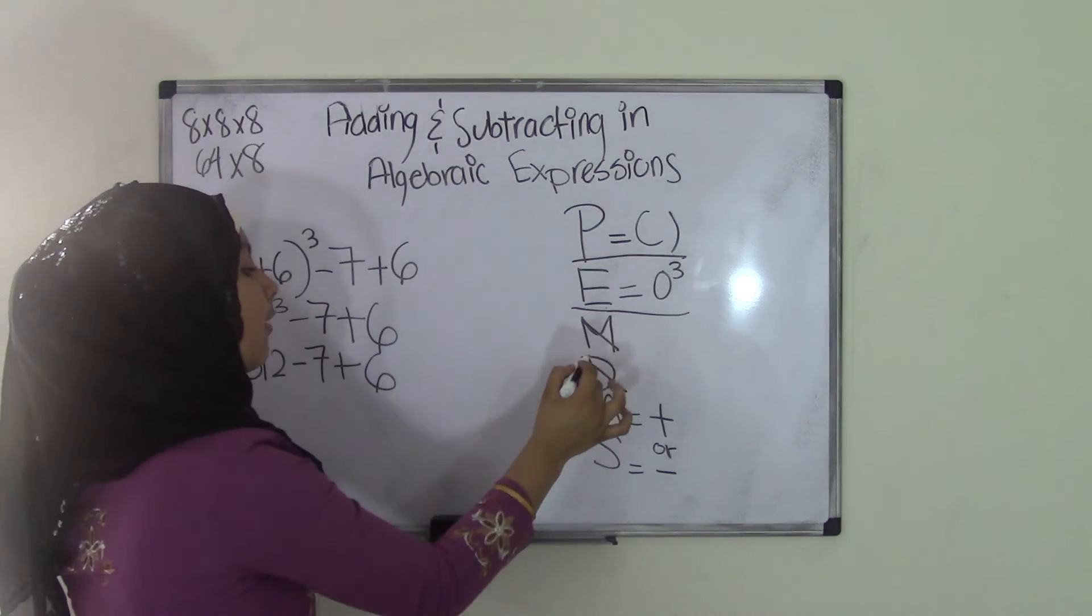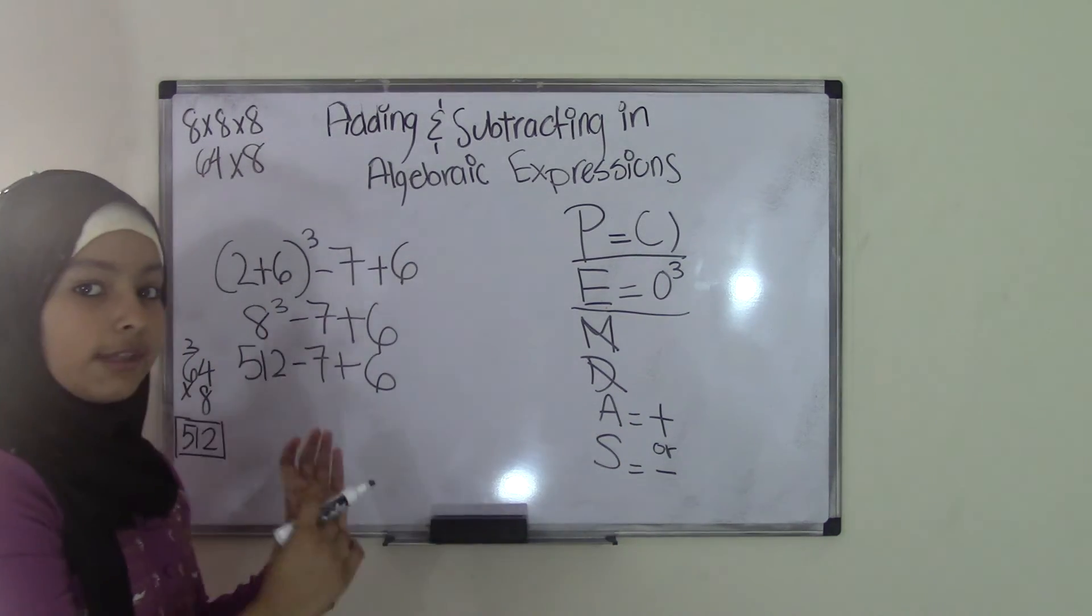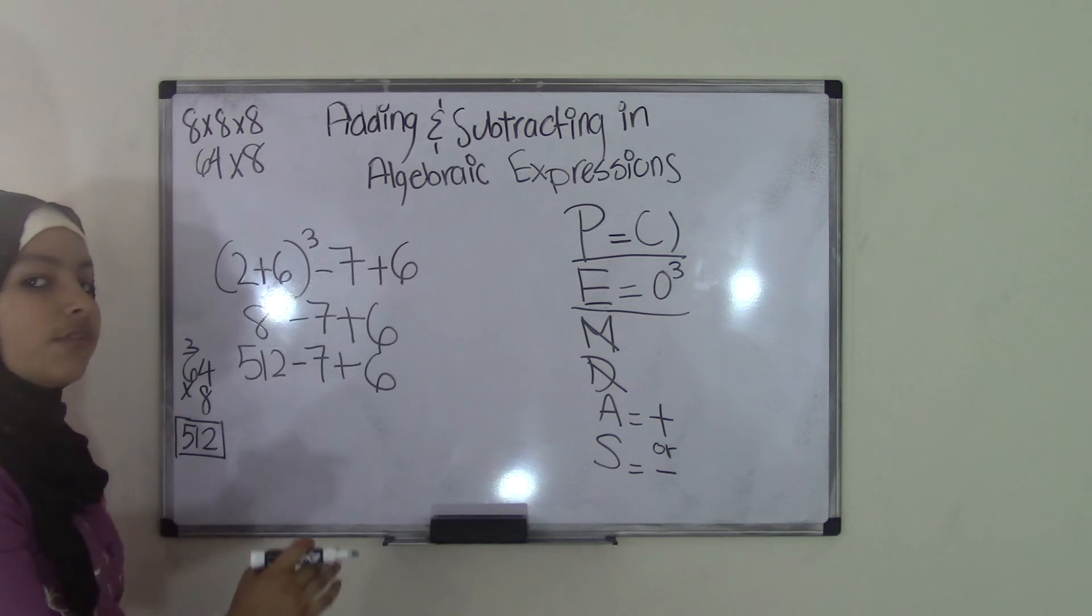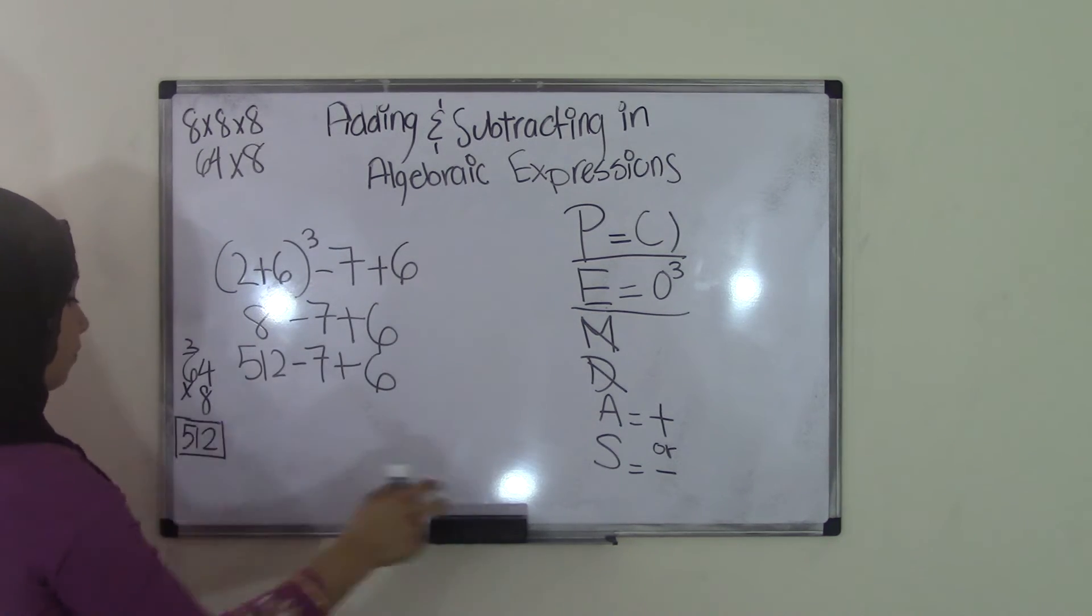Now, next thing, since we don't have multiplication or division, is adding or subtracting. Remember, left to right. So if you can see here, subtraction comes first from left to right. So we're going to do 512 minus 7.